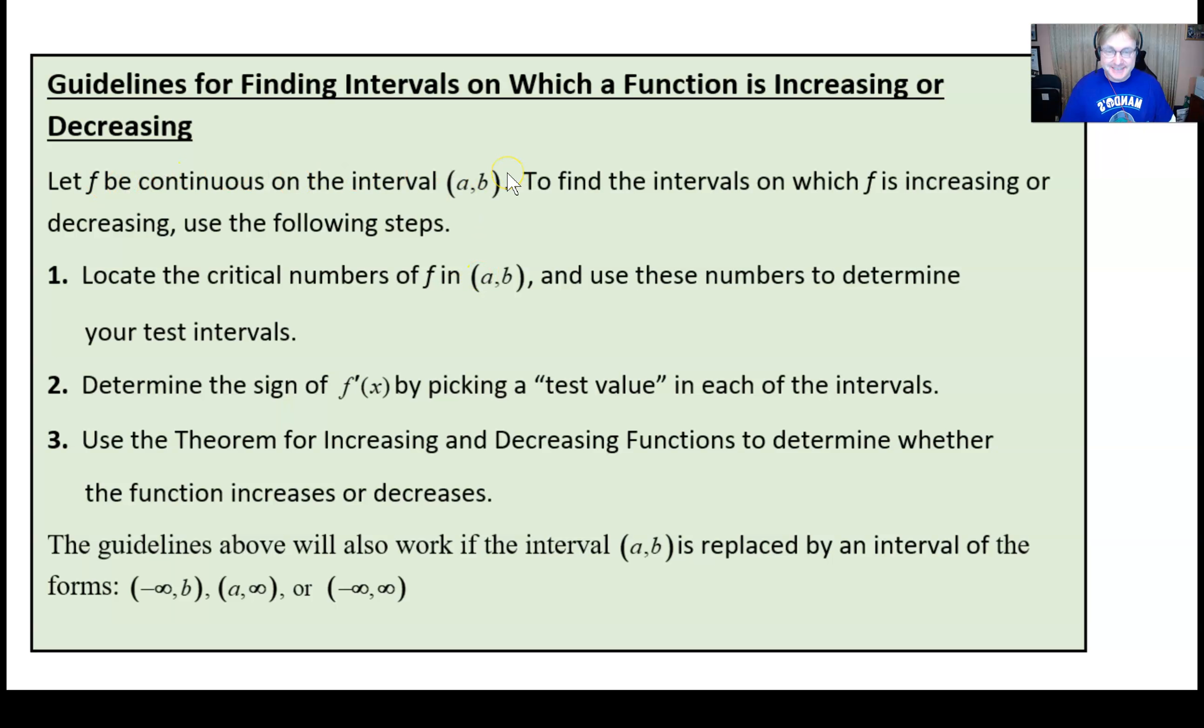So let's go ahead and read through this because that's going to make more sense. It says, let f be continuous on this open interval here, a to b. To find the intervals over which f is increasing or decreasing, what we're going to do is locate the critical numbers of f on that interval and use those numbers to determine the test intervals. Simply determine the sign of f' by picking a test value like we talked about in each of those intervals. And then you use this theorem that we talked about for increasing and decreasing functions to determine whether the function increases or decreases.